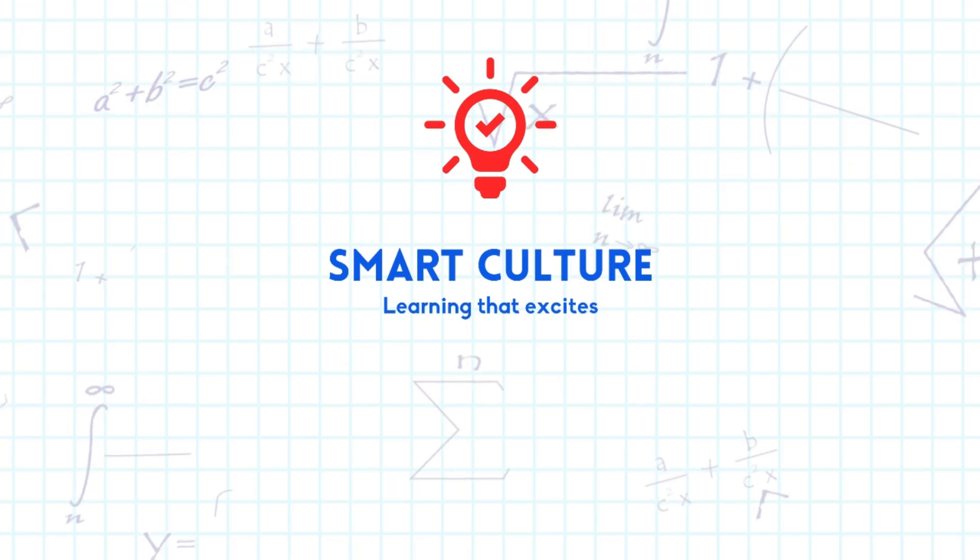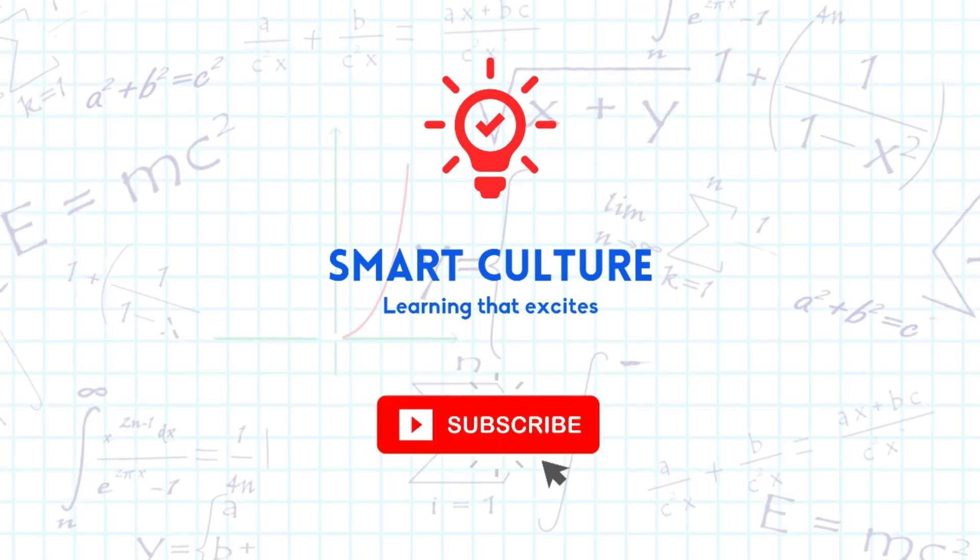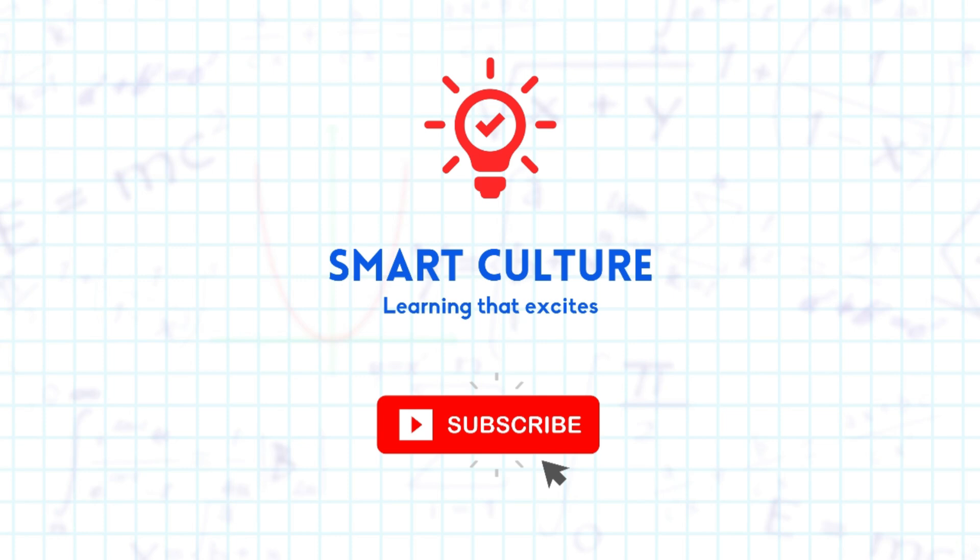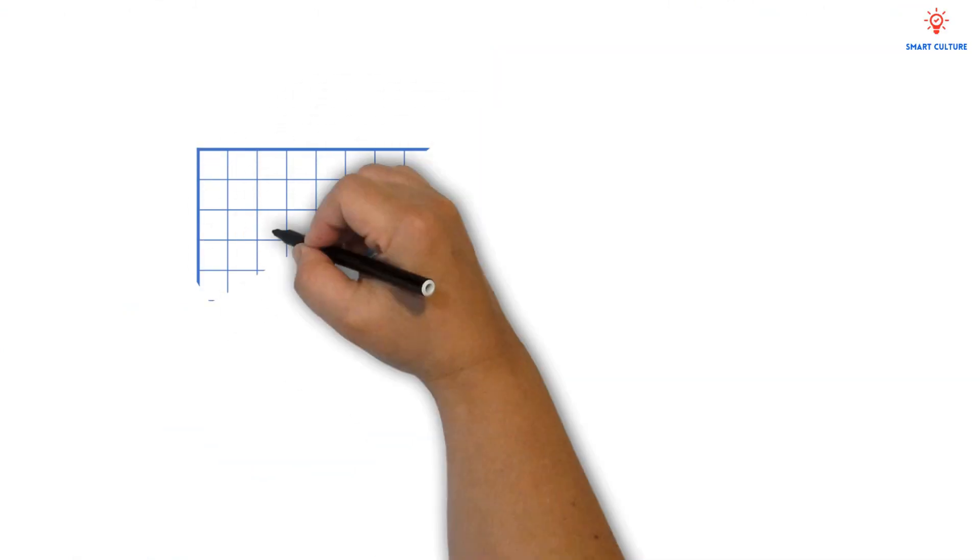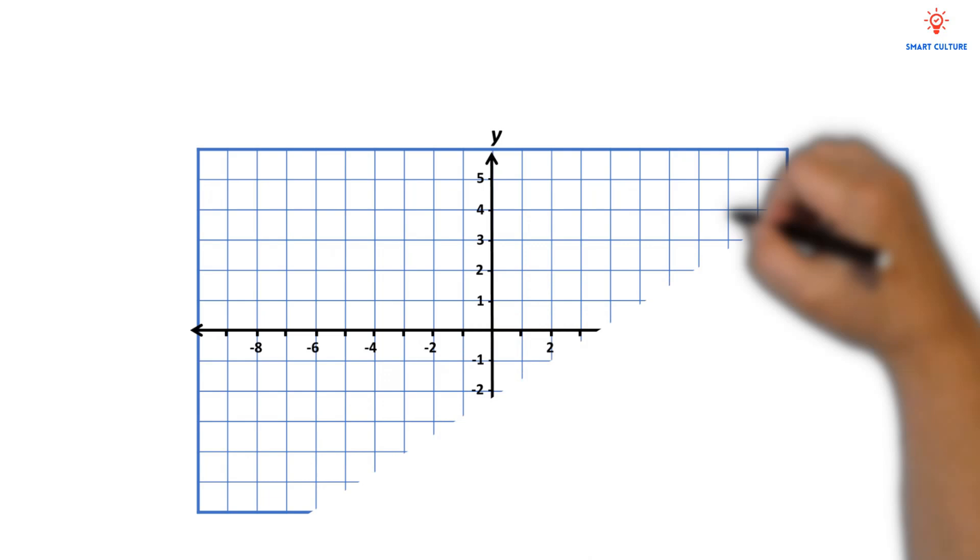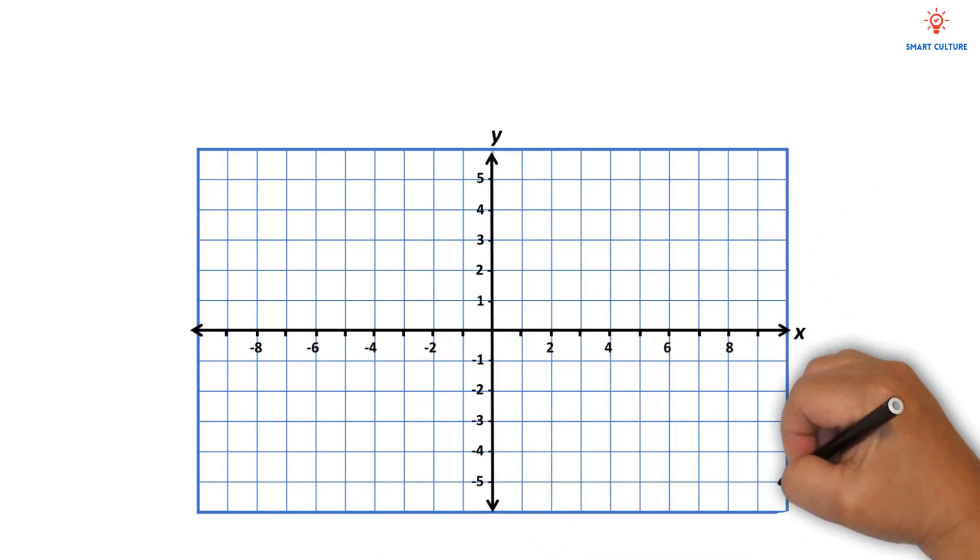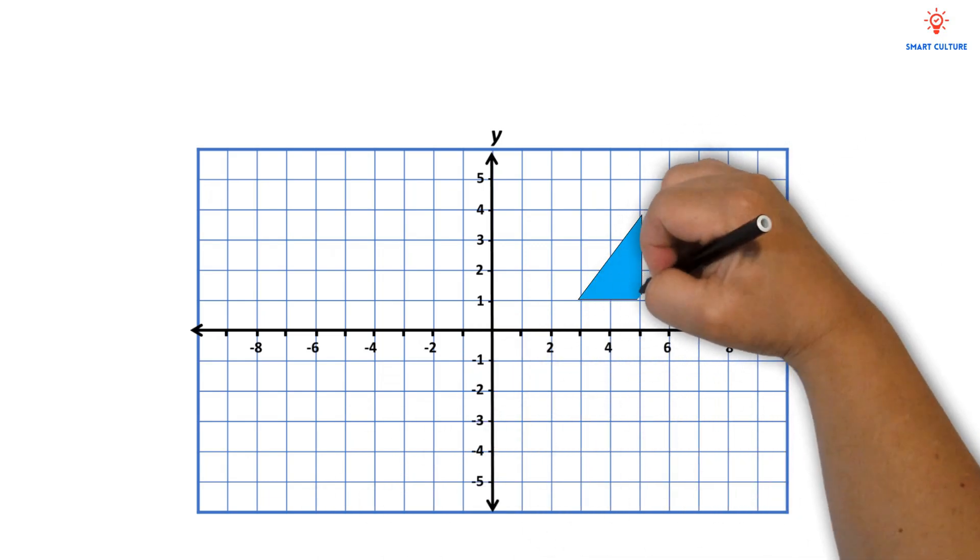Smart Culture Mathematics. Let's talk about translating a geometric figure on a coordinate system. This is when you move a geometric figure up, down, left, right, or in both directions.